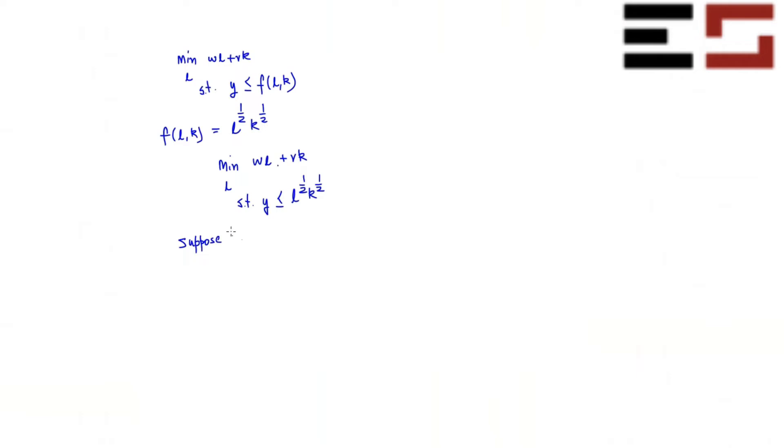Suppose K is positive. Now let's see, how do you solve this problem? Now notice that Y is given, K is given, W is given, R is given, K is given, and W is positive. It's a single variable problem. Tell me what is the solution? You just have to figure out the labor which minimizes cost subject to this constraint.